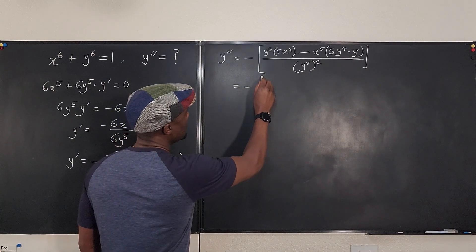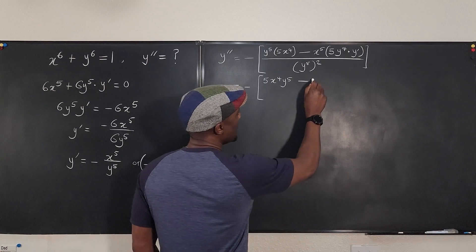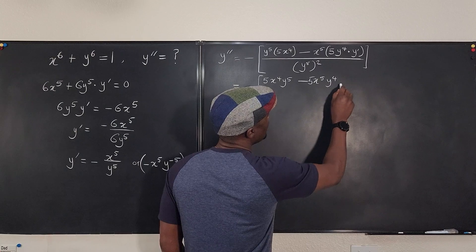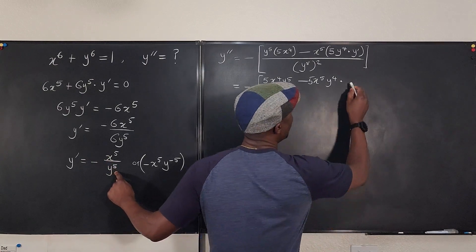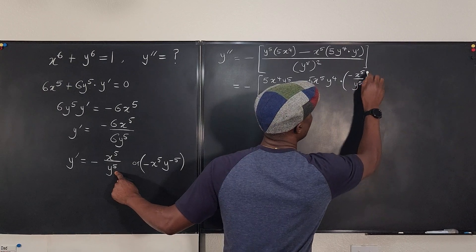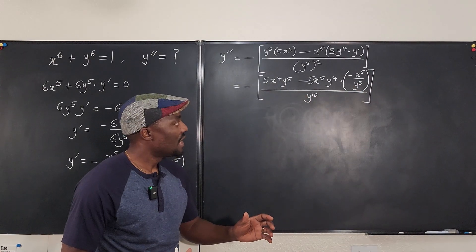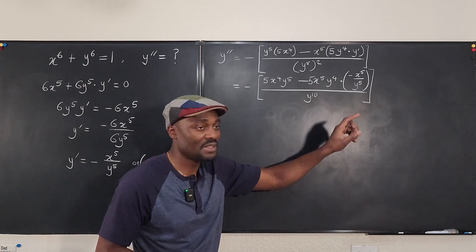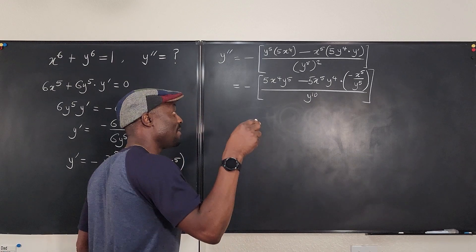Let's clean this up. This is going to be minus, and I'm going to get 5x to the fourth y to the fifth, minus 5x to the fifth y to the fourth times y prime. But we know that y prime is negative x to the fifth over y to the fifth, so I'm going to substitute that in: negative x to the fifth over y to the fifth. Everything is divided by y to the tenth. Now I'd like to eliminate the nested fraction. My strategy is to multiply by the inner denominator — multiply every term by y to the fifth.